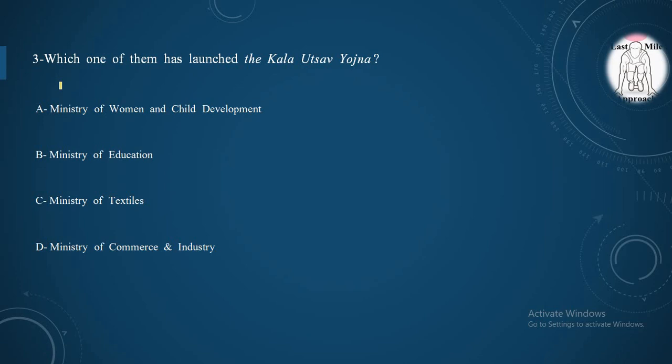Moving to third question: Which one of them has launched the Kala Utsav Yojana? Option A: Ministry of Women and Child Development, Option B: Ministry of Education, Option C: Ministry of Textiles, Option D: Ministry of Commerce and Industry. And the correct option is option B. Ministry of Education has launched the Kala Utsav Yojana.